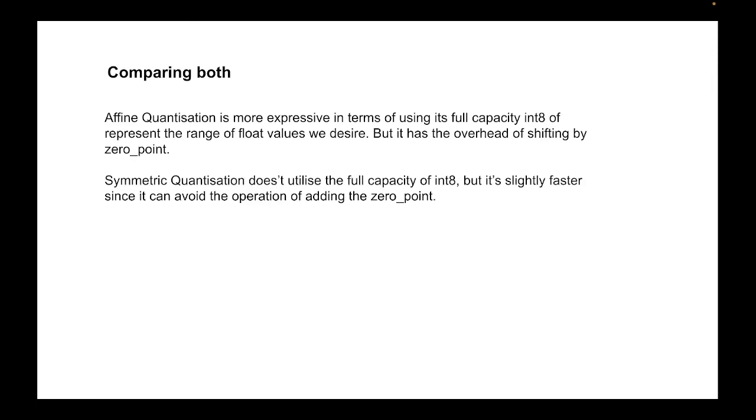So comparing both of these quantization techniques, you could say affine quantization is more expressive in terms of using its full capacity of int8 in representing our source range to the target range. But it has this overhead of shifting by zero point. Zero point could be a non-zero integer, so we need to shift the values by zero point to make sure that zero gets mapped exactly to an integer. Whereas in symmetric quantization, it doesn't utilize its full capacity of int8, but it's slightly faster since it can avoid this operation of adding zero point because zero point is anyway forced to be zero. So you don't need to do this shifting by zero point in symmetric quantization.